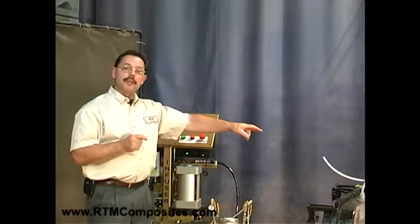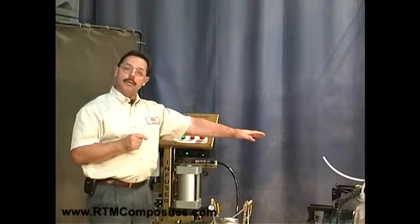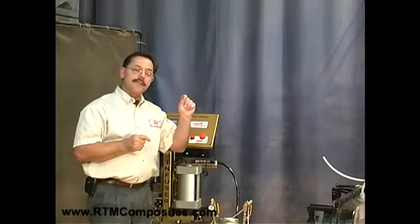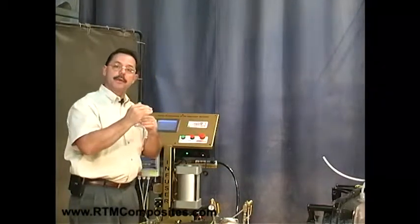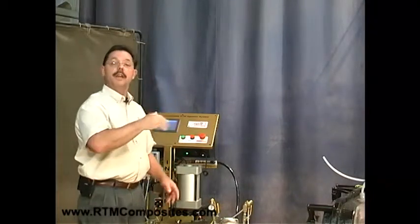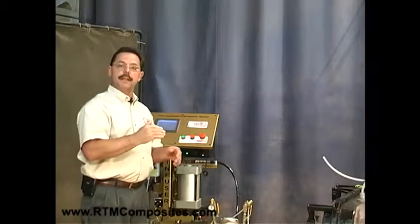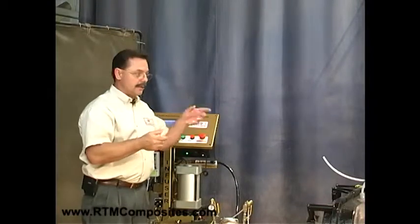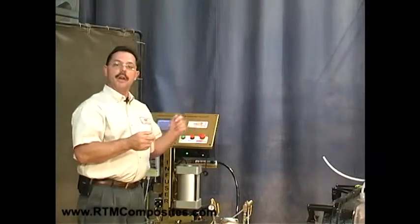So, the infuser PRG, unique to the industry, no one else is doing it, will sense the vacuum level. If it's not within the preset level that we've put into the recipe, the machine stops. It says, hold on a minute, you're either over or under your vacuum setting. Correct it, and once that's corrected, next time you hit start, it will take off accordingly.